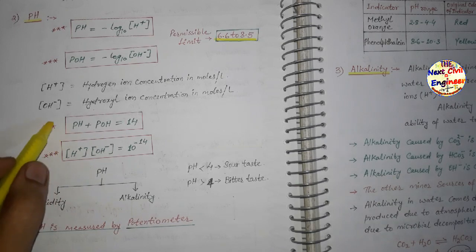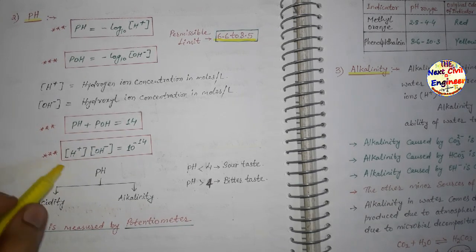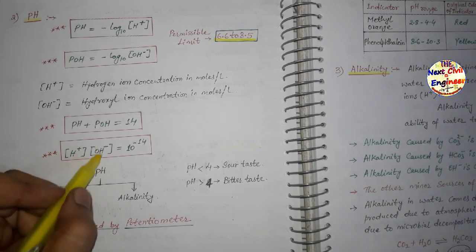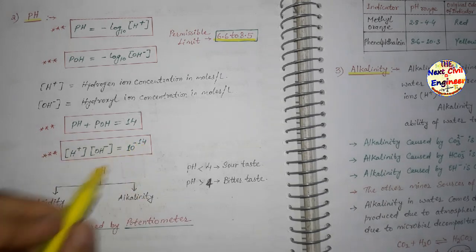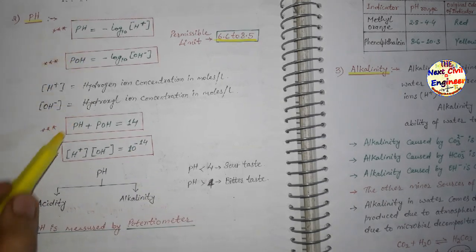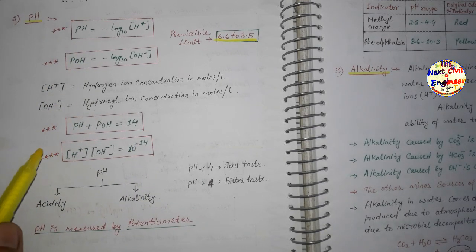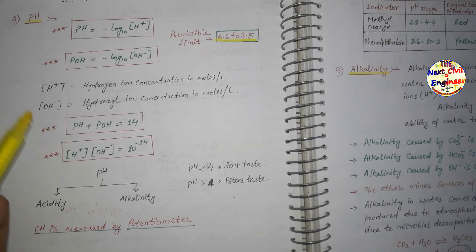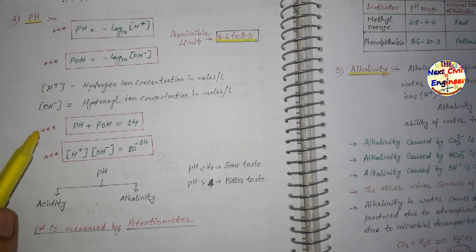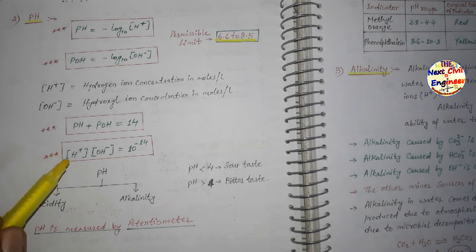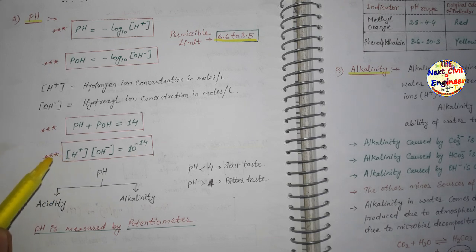Several numericals are based on these pH formulas, and many gate and state exam questions have appeared on them. After watching this lecture, pick up previous year questions (PYQs) and solve them. If any doubt remains, comment below and we will try to solve it. pH can describe two properties: acidity and alkalinity.